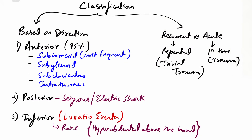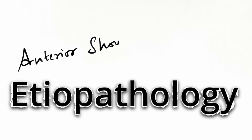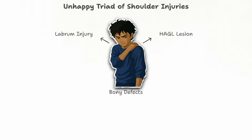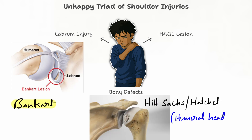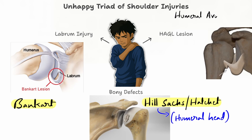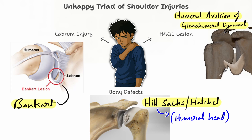Next, the etiopathology of anterior shoulder dislocation involves the 'unhappy triad of shoulder,' which includes three things: Bankart lesion, Hill-Sachs lesion (also called Hatchet's deformity) on the humeral head, and humeral avulsion of the glenohumeral ligament (HAGL). Bankart lesion is a small tear in the labrum — a soft tissue lesion.